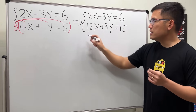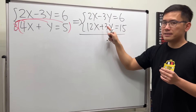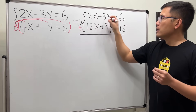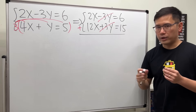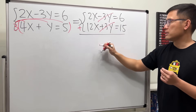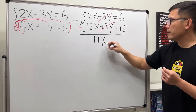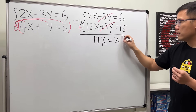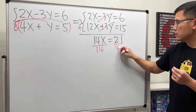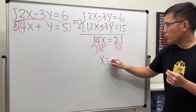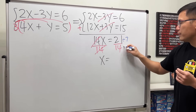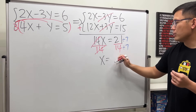As you can see, they have the same number but opposite sign. So now if we add the equations, negative 3y plus 3y will cancel out to be 0. Then 2x plus 12x is 14x, and 6 plus 15 is 21. Let's divide both sides by 14. We get x equals 21 divided by 14, reduced by 7 — just like what we did earlier — and we have 3 over 2.